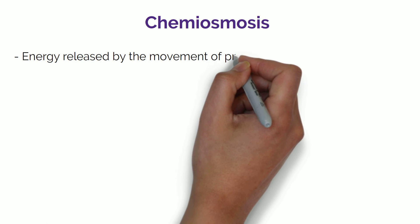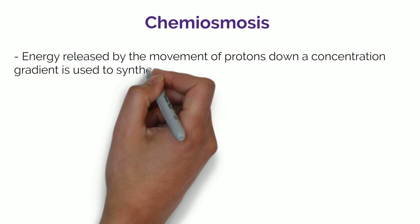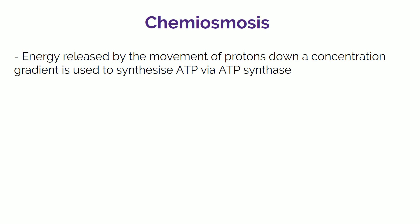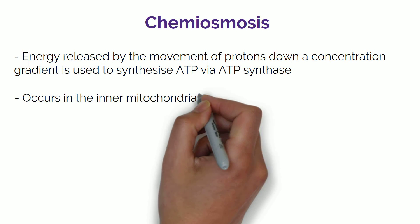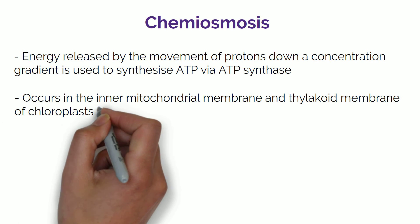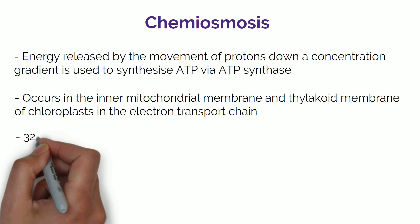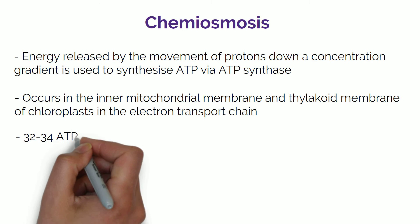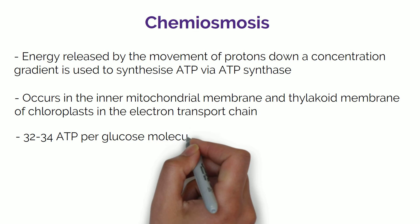Chemiosmosis: energy released by the movement of protons down a concentration gradient is used to synthesize ATP via ATP synthase. This occurs in the inner mitochondrial membrane and the thylakoid membrane of chloroplasts in the electron transport chain, producing 32 to 34 ATP per glucose molecule.